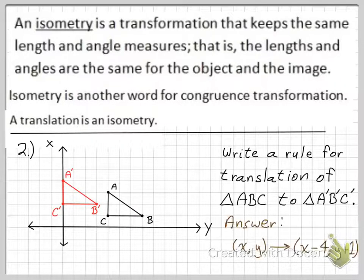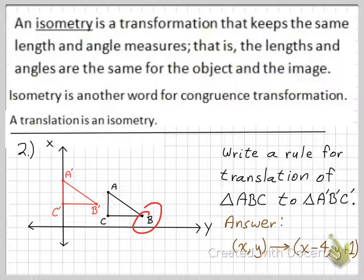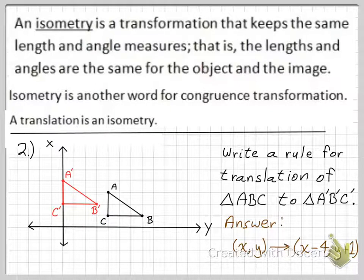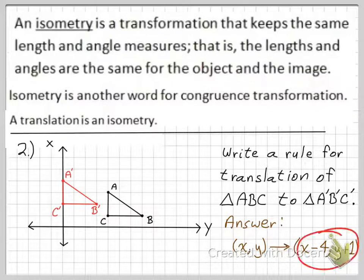So the rule for translation would be (x−4, y+1). You can check that by using B to B' or C to C' — it should be the same rule for all corresponding points. For B to B': 4 to the left and then 1 up. For C to C': 4 to the left and then 1 up. So that's your rule for translation: (x−4, y+1).